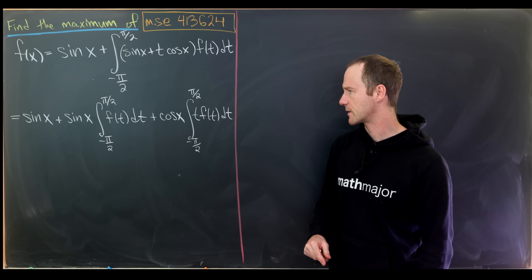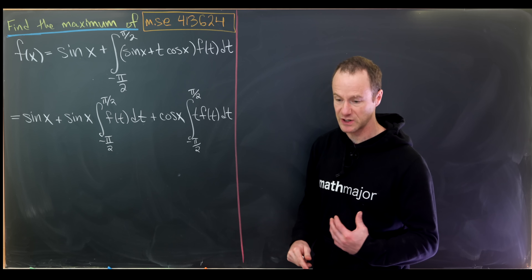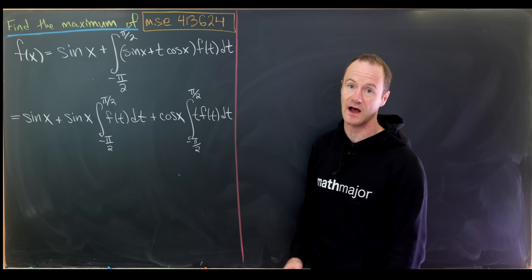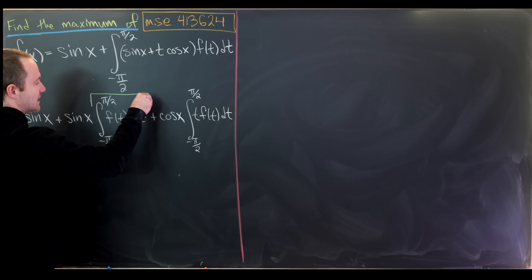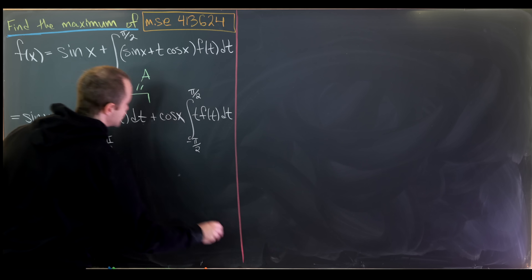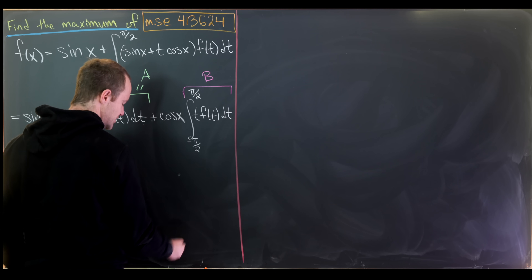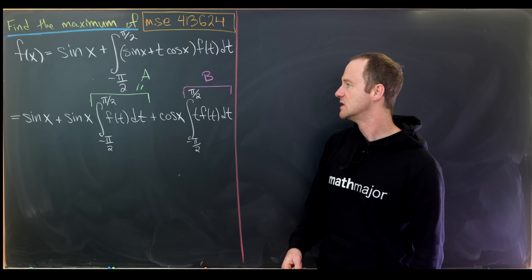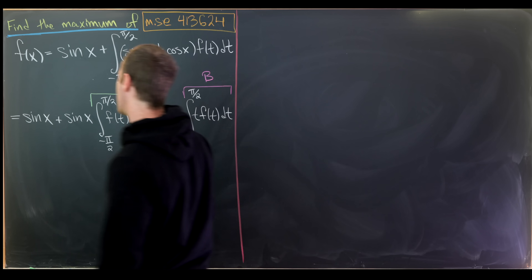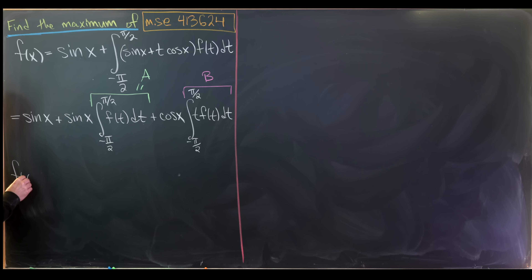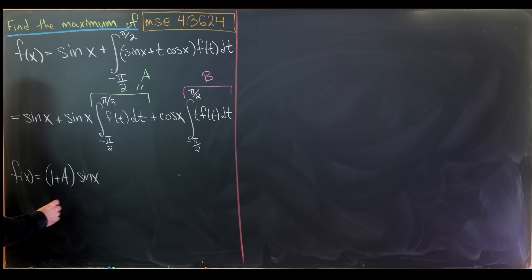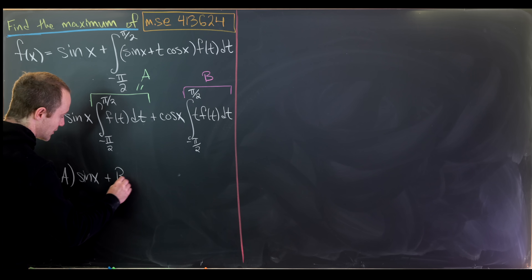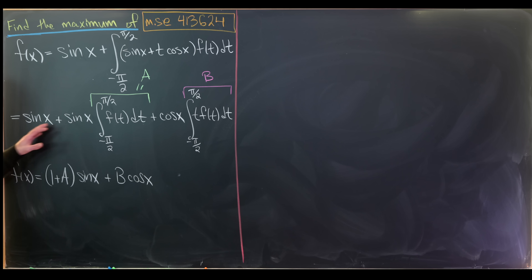So where are we going to go from here? I'm going to introduce a little bit of notation. I'll label the first integral as A and the second integral as B. We could just leave these integrals around throughout our whole calculation, but this will make it look a little simpler. That leaves us with f of x equals 1 plus A times sine of x, plus B times cosine of x — just from factoring sine of x out of the first two terms.